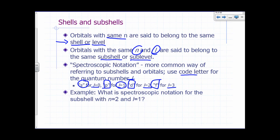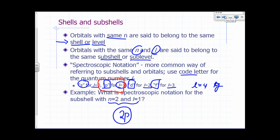For example, the subshell corresponding to N equals 2 and L equals 1 would be called the 2P subshell. For L equals 4, the code letter would be G. These are most of what we'll need to describe electrons in atoms.